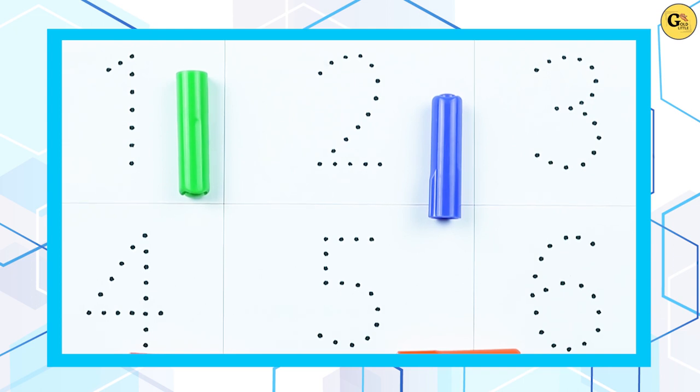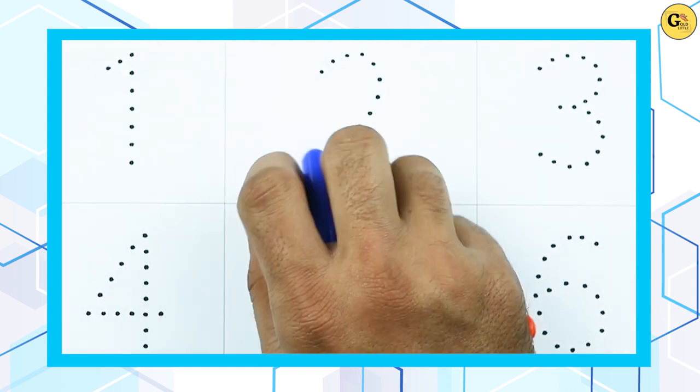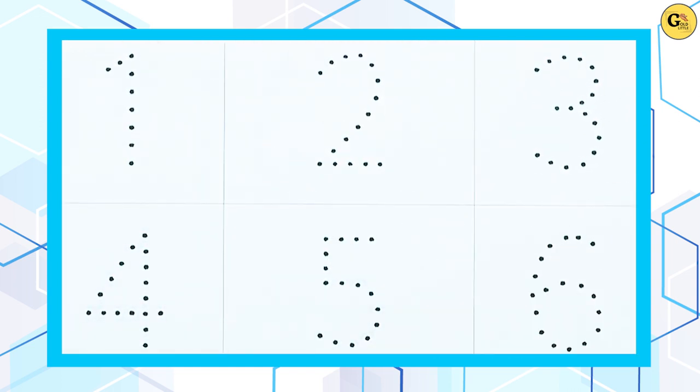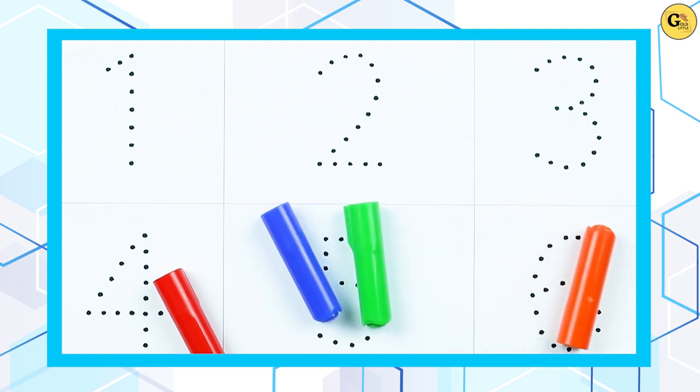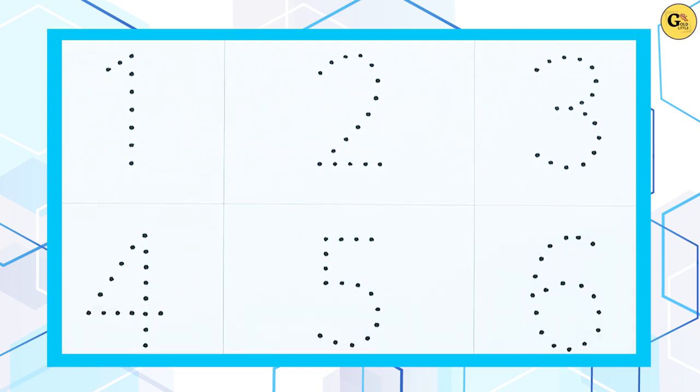Hello friends, today we learn numbers 1 to 10 with some colors: red color, blue color, green color, orange color. Let's start.